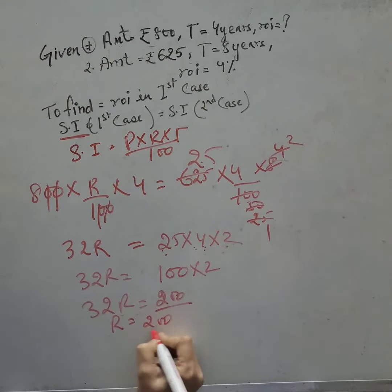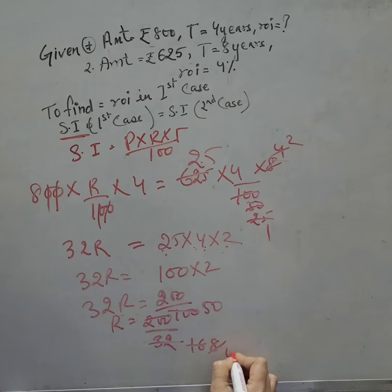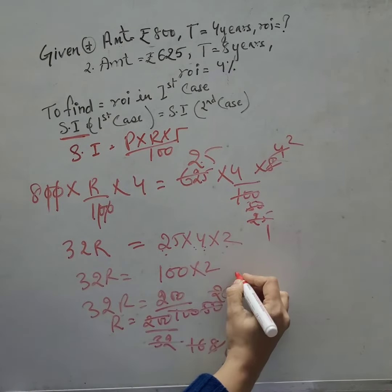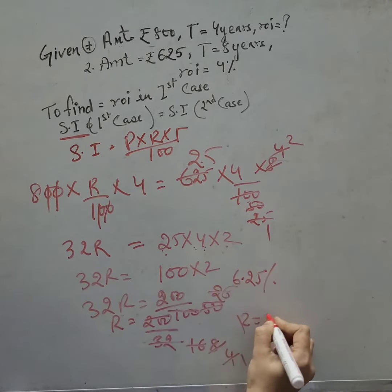So R is equal to 200 divided by 32, which equals 100 divided by 16, equals 50 divided by 8, equals 25 divided by 4, equals 6.25 percent. Thank you and bye bye.